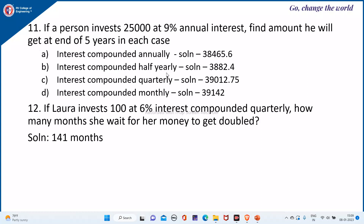Next is compounded half-yearly. Here you have to convert the 9% as a half-year interest, which will be 9 divided by 2 into 1 divided by 100. The number of years is 5, and in 5 years, how many half-years? It will be 5 into 2. Next is compounded quarterly — the rate of interest is divided by 4 and the number of years is multiplied by 4.